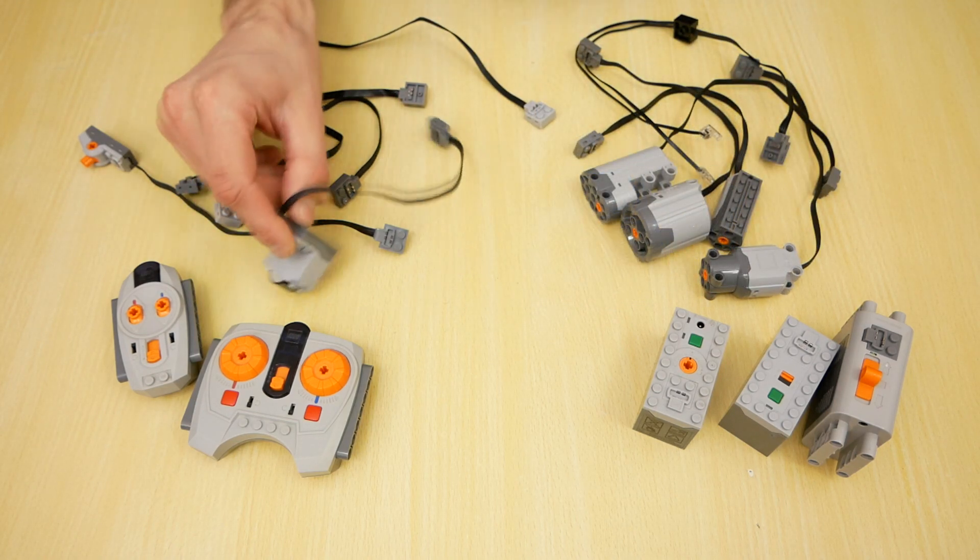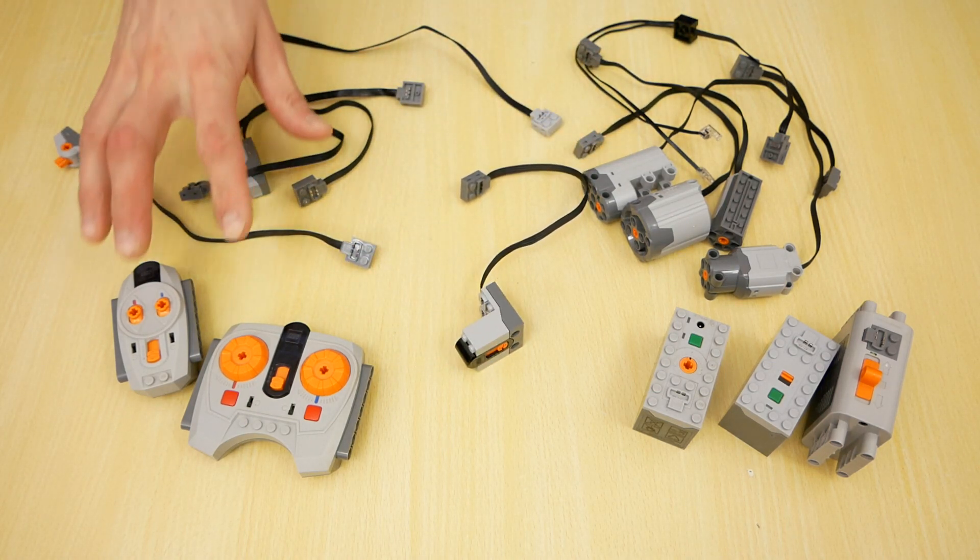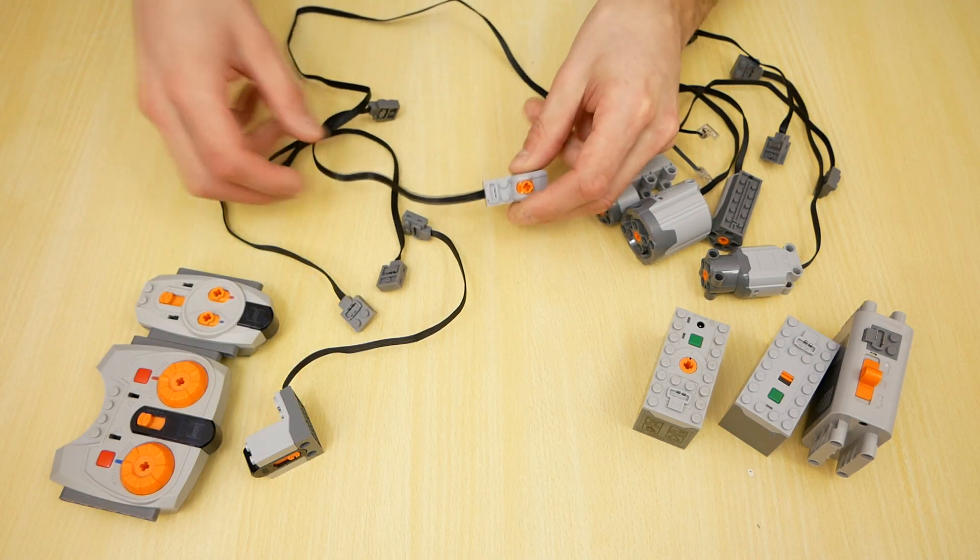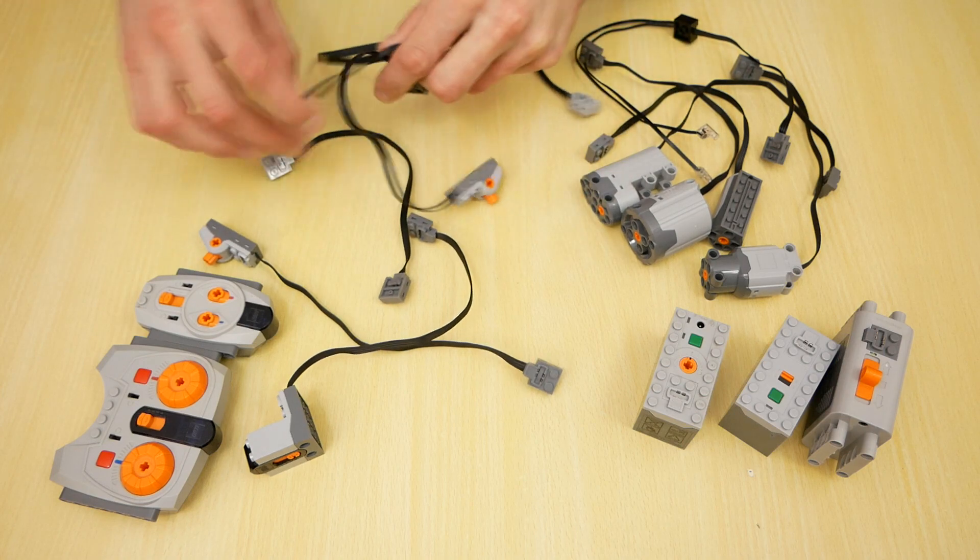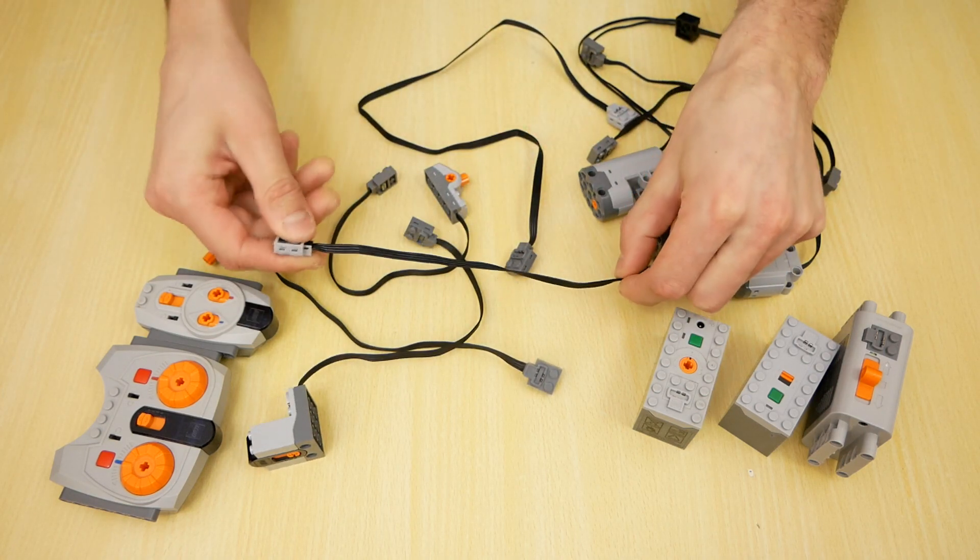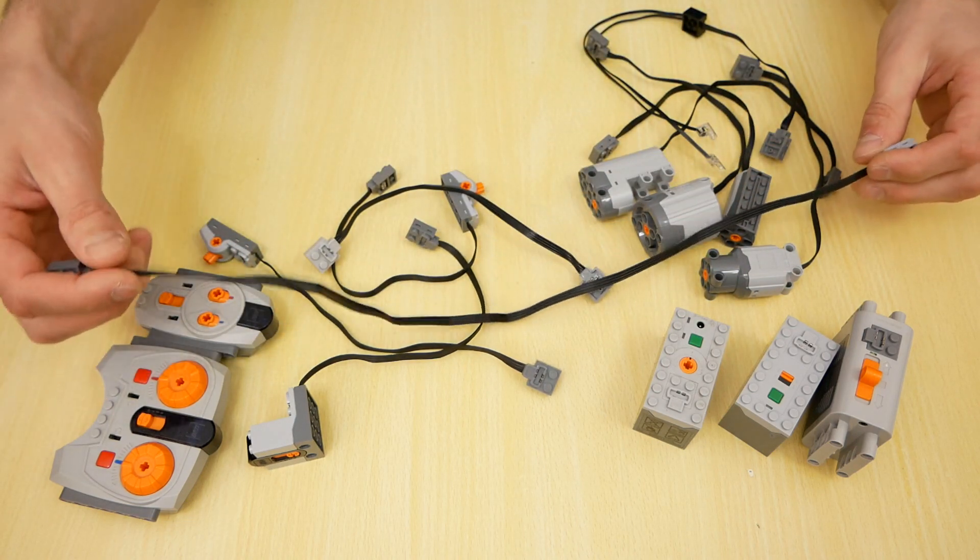The system contains infrared receiver for remote control and two types of remote control units. Additional components are polarity switches and extension wires. Short wire, 20 cm long. And long wire, 50 cm long.